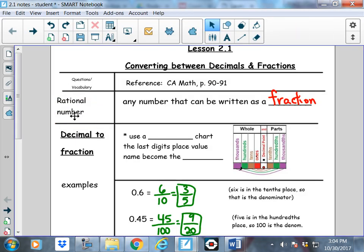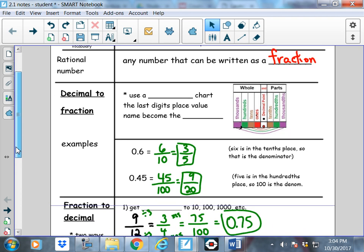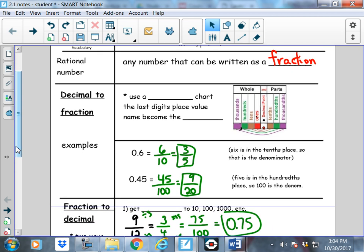Moving on from there. On to the meat of the matter. Decimals into fractions. So, use a place value chart. Place value chart. The last digit's place value name becomes the denominator. Denominator. Alright. So, there's a place value chart here on your notes, and we'll go over this a little bit more.